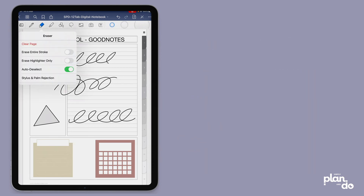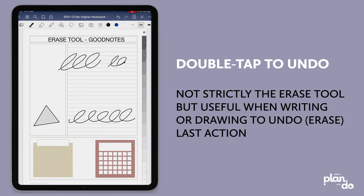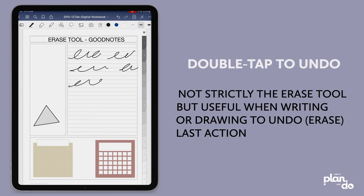Another shortcut for erasing — which isn't strictly erasing at all, it's actually an undo — is the double tap. When you're busy writing or drawing and want to make a change, if you double tap on the screen, it automatically undoes that and you can carry on. It's not an erase function, but if you use it as you're drawing or writing, it acts as an eraser for your last action. If you want to remove multiple strokes, you can keep undoing. But obviously if you've got a lot to delete, it's best to go over to the eraser tool. The double tap is a really good shortcut — you can write, fix errors, and carry on without having to go back up to the top.